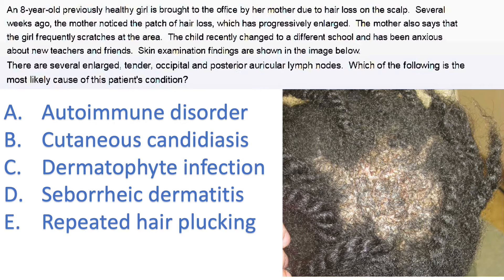The first question says an eight-year-old previously healthy girl is brought to the office by her mother due to hair loss on the scalp. The first thing I need you to do with any derm question is look at the picture first — it usually says it all, like a spot diagnosis. Here we can see an area of hair loss, and also some scaling.